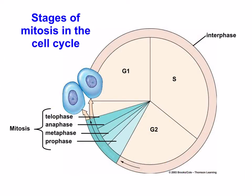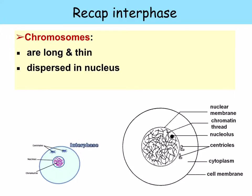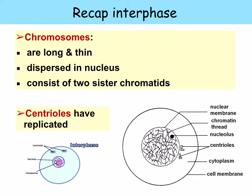In the previous topic, we looked at the cell cycle. You've got interphase, mitosis, and cytokinesis. Interphase has subphases G1, S, and G2. Then mitosis is broken up into prophase, metaphase, anaphase, and telophase, and it occurs after the second growth phase, G2 of interphase. Cells don't divide continuously — they undergo a regular cycle of division separated by periods of cell growth. During interphase, chromosomes are long and thin and dispersed in the nucleus. They consist of sister chromatids joined by a centromere, and remember that the centrioles have also replicated.